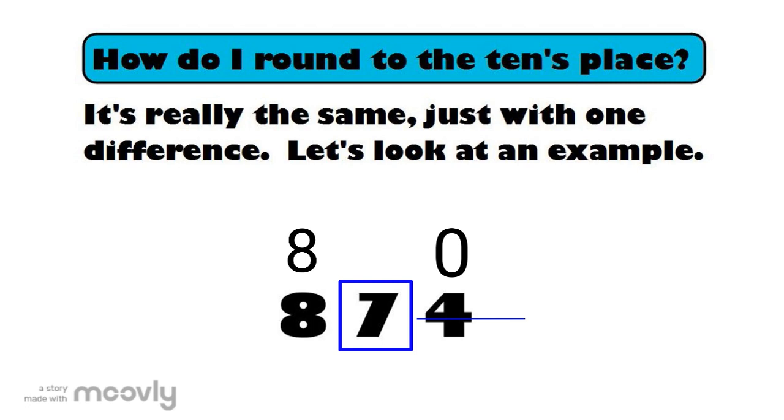Next, just do what you did before. Look at the number after the box. This number is a four. Is that a big guy or a little guy? That's right. It's a little guy. So, in this case, the four is going to tell the seven to stay the same because he likes him just how he is. So, 874 rounded to the nearest ten is 870.